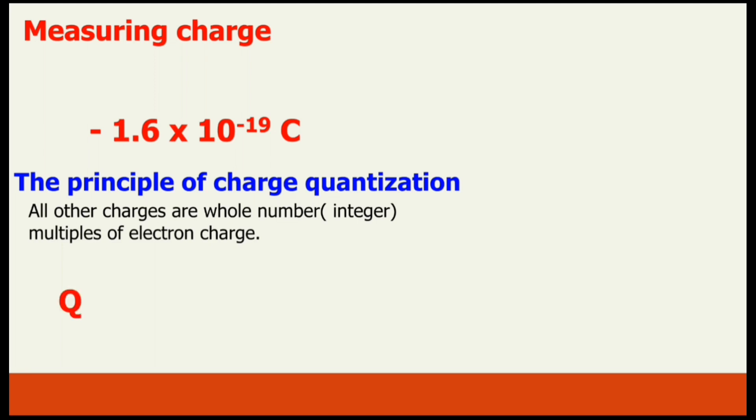We can use a formula that relates to the principle of charge quantization. If Q is the amount of charge on a material, then that charge is equal to the product of two quantities: n and e. The n represents a whole number, an integer, and the e represents the electron charge. So Q equals ne. This is the formula that we use to calculate the number of electrons that need to be added or that a material will lose when its charge changes during the charging process.